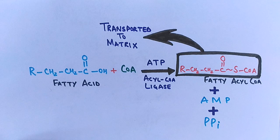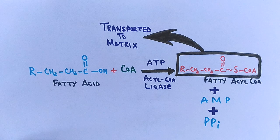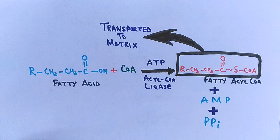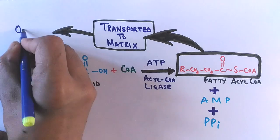But here occurs a problem. If the activated fatty acid is long chain fatty acid of 12 plus carbon atoms, then it is transported to matrix via carnitine shuttle, which we will discuss in the next part of the video. And this carnitine shuttle occurs just after the fatty acid activation.